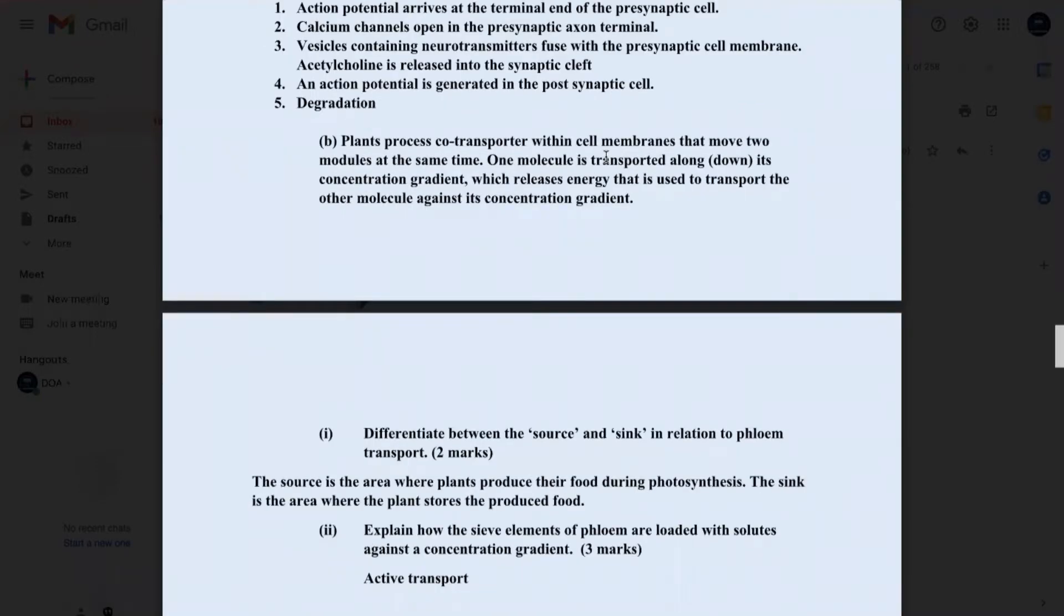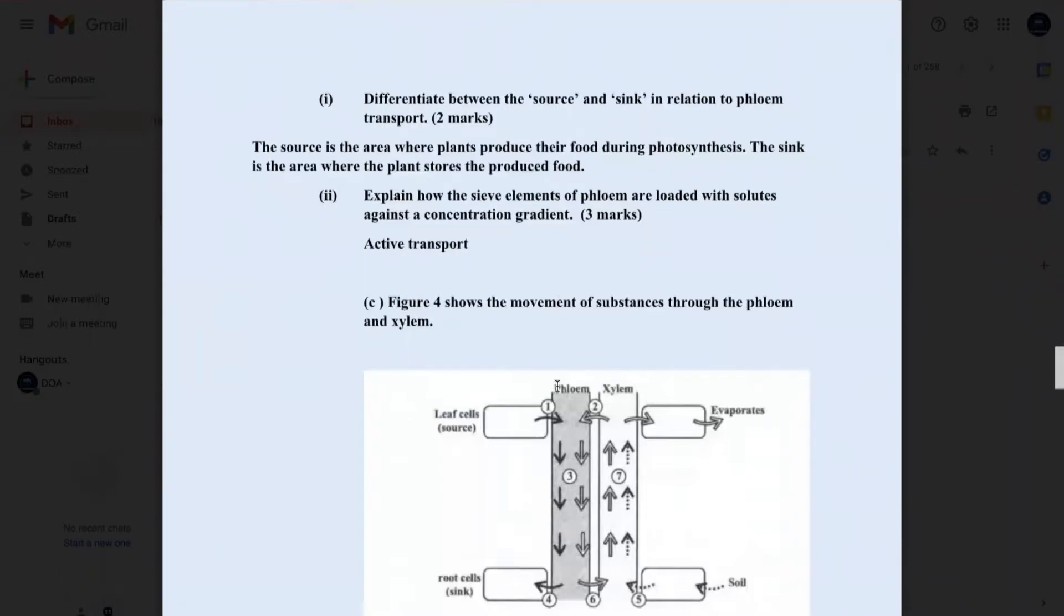Part B, plant process co-transporter proteins within cell membranes that move two molecules at the same time. One molecule is transported along or down its concentration gradient, which releases energy that is used to transport the other molecule against its concentration gradient. Part 1, differentiate between the source and sink in relation to phloem transport. So, the source is the area where the plants produce their food during photosynthesis, while the sink is the area where the plant stores or use the produced food. So, with these definitions, can you think about examples of sources or sinks? So, you could say that the leaf is an example of a source and the root or buds are examples of sink.